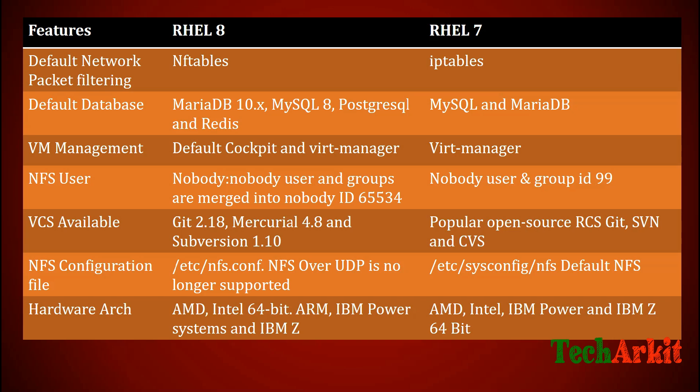Regarding NFS users and groups, in RHEL 8 the nobody user ID is 65534. In RHEL 7 the nobody user and group ID was 99, but 65534 was the overflow ID in RHEL 7.